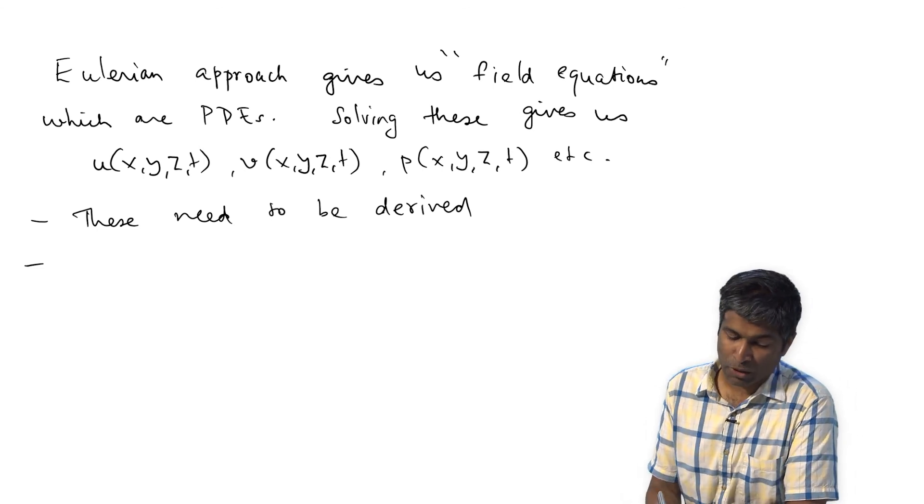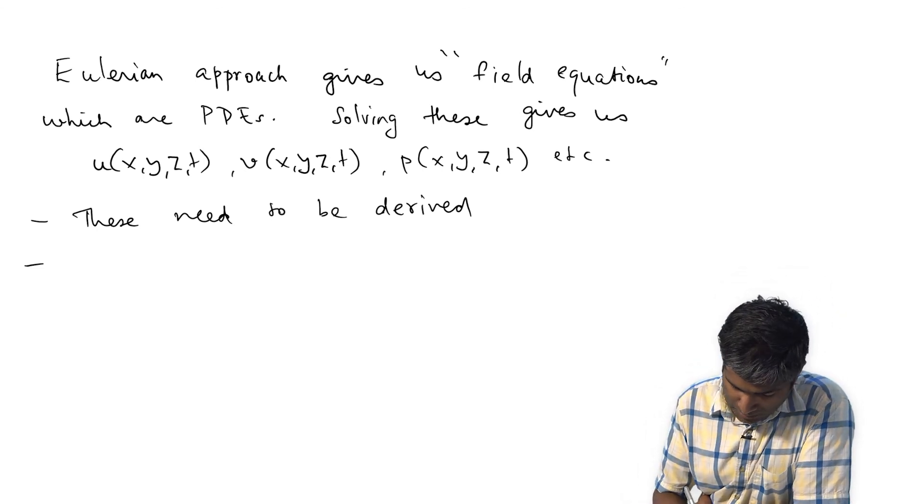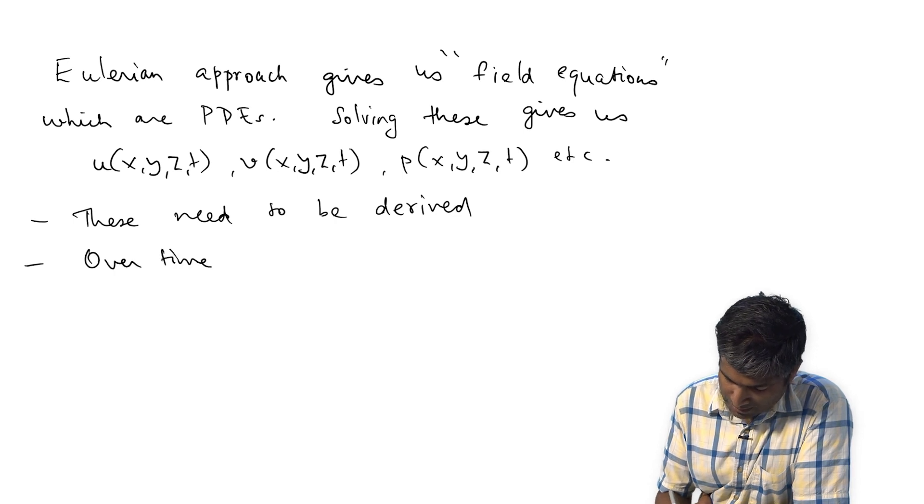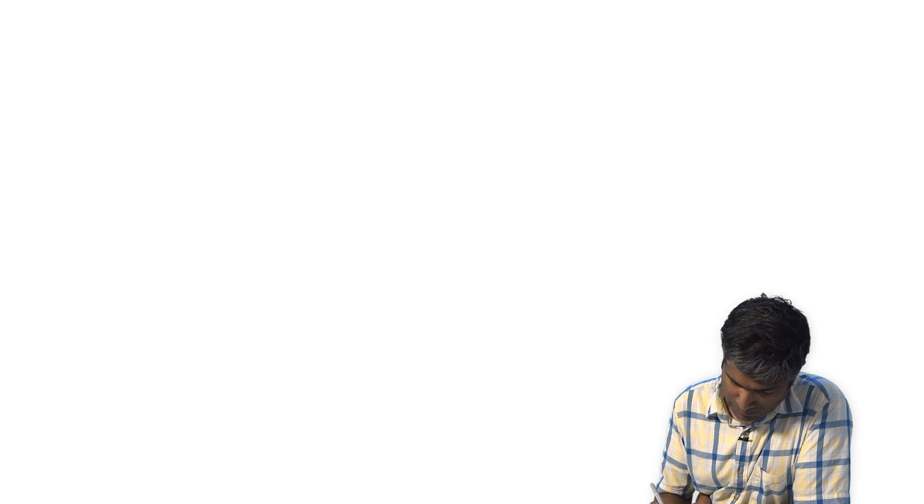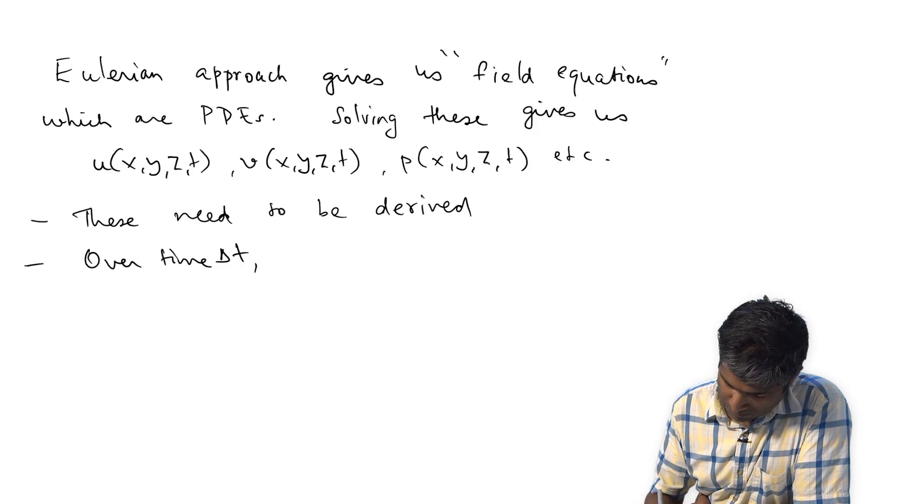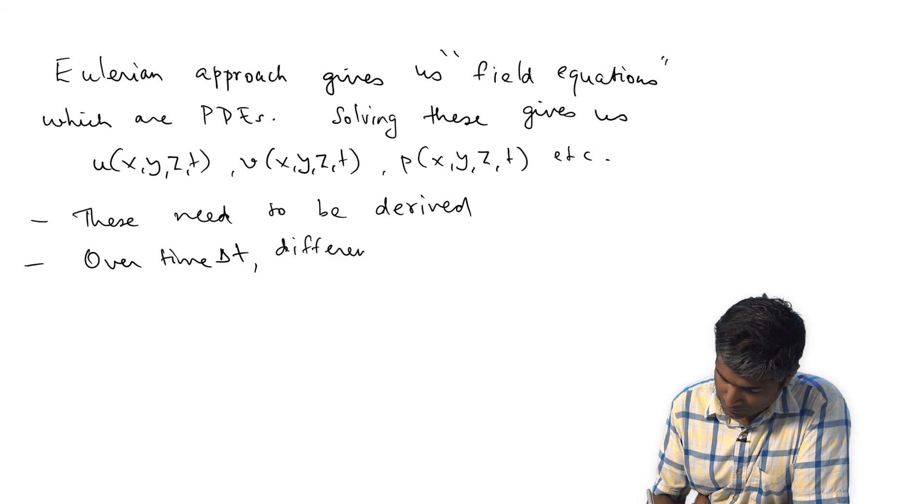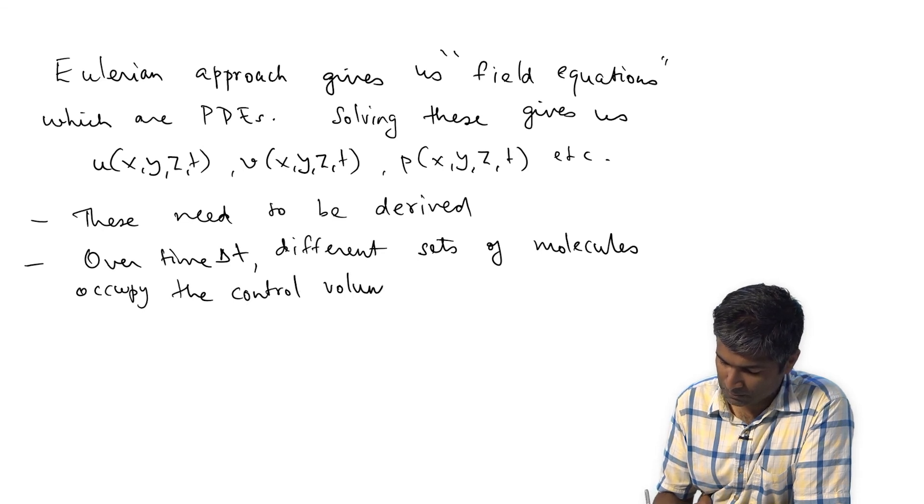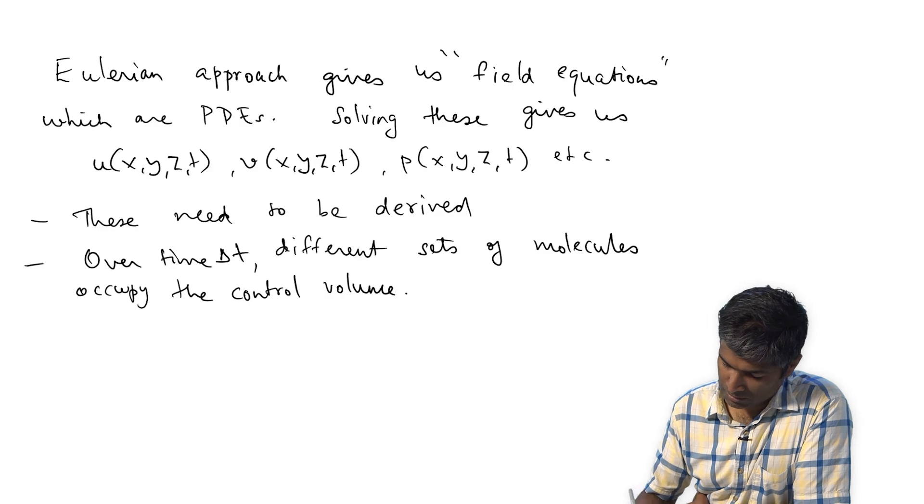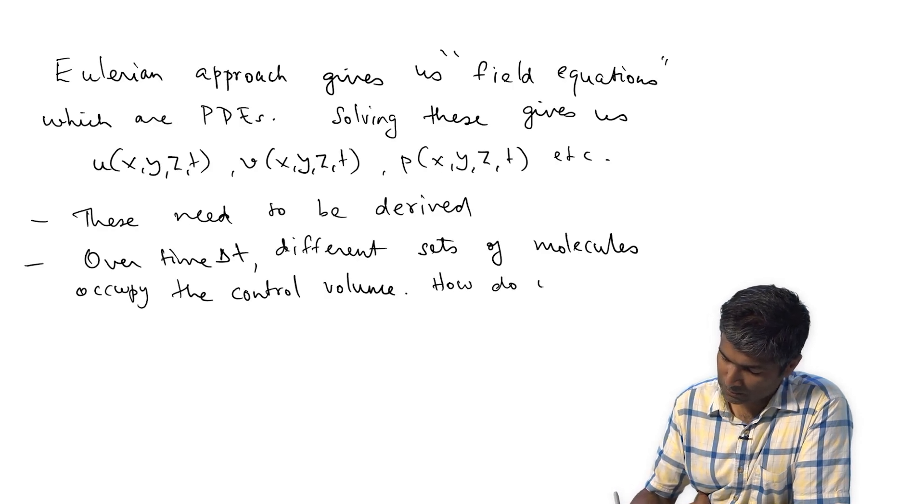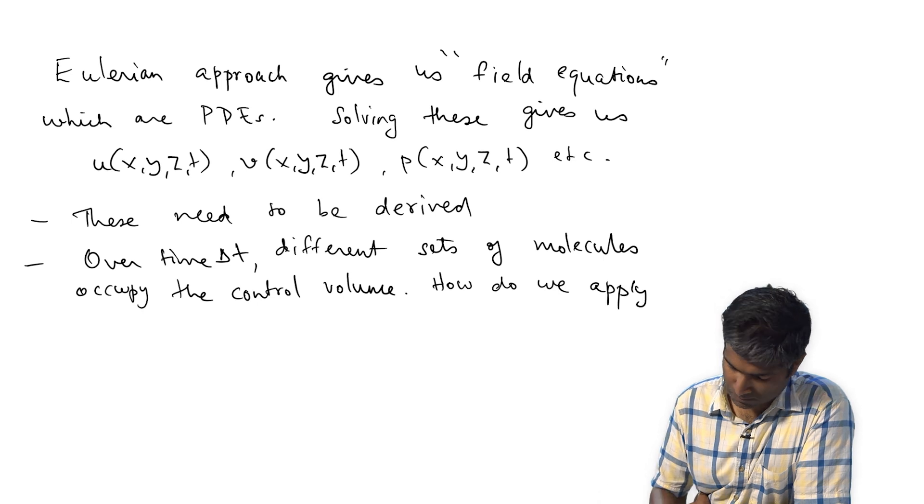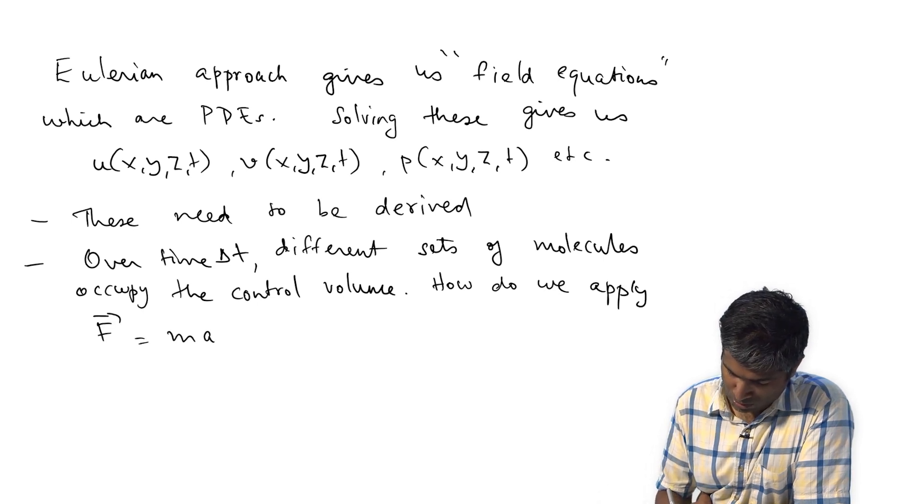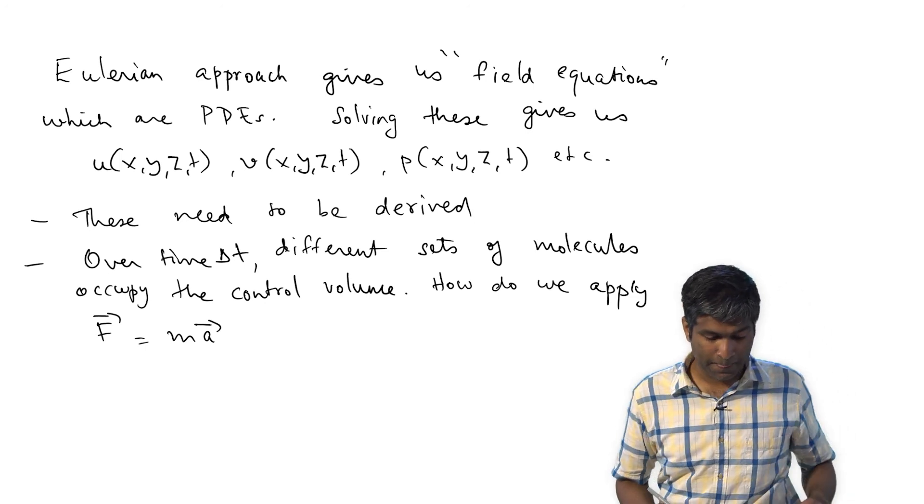So the question is, how do I go about writing F equals ma for a system that doesn't even have the same molecules? That's the big sticking point with using the Eulerian approach. Over time delta t, different sets of molecules occupy the control volume. And so how do we apply F equals ma? What is the m here that we need to use?